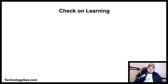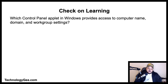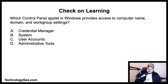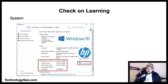Now let's get into some check on learning. Question one: which Control Panel applet in Windows provides access to the computer name, domain, and work group settings — is it Credential Manager, System, User Accounts, or Admin Tools? The correct answer is System, which is where you can find all of that information.